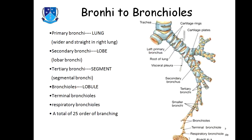The primary bronchus goes to the lung through the hilum. The right primary bronchus is wider and straighter, while the left primary bronchus is narrower and goes somewhat obliquely.